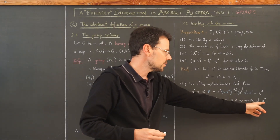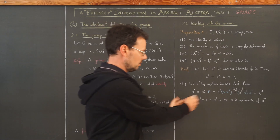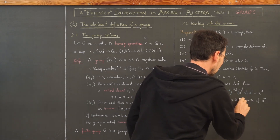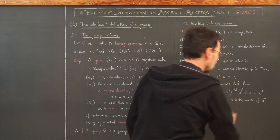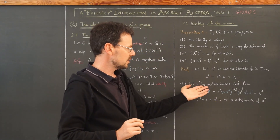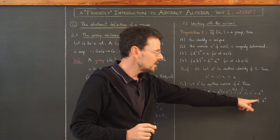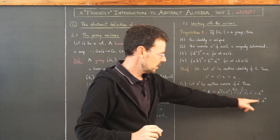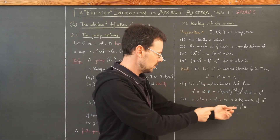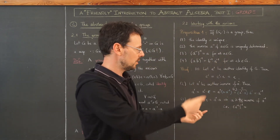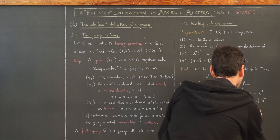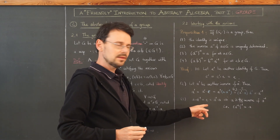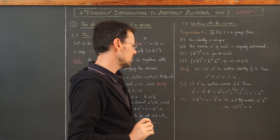This means a is also an inverse of a⁻¹. Now, using property 2 — that inverses are uniquely determined — a is the inverse of a⁻¹, which means (a⁻¹)⁻¹ = a. That's it. It's not as easy as it looks.